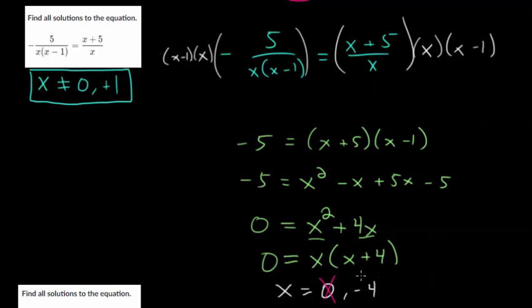So negative 4 is our only solution, or at least we think so. At this point you'll want to plug it back in, make sure that the equation does make sense. But I can assume you did that, and this is definitely true. So negative 4 is the only solution to this one.